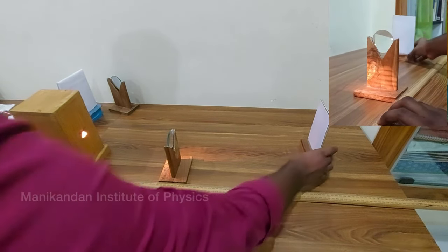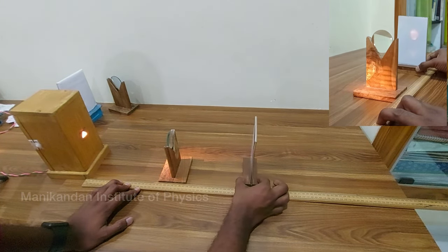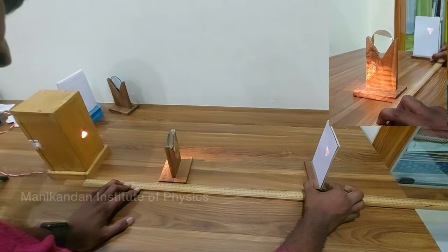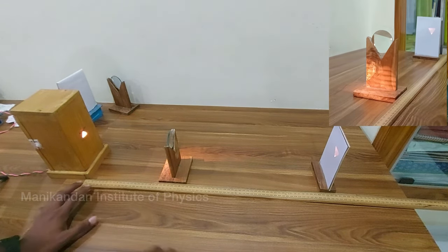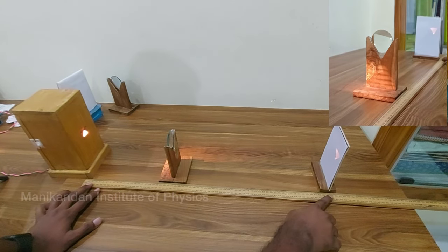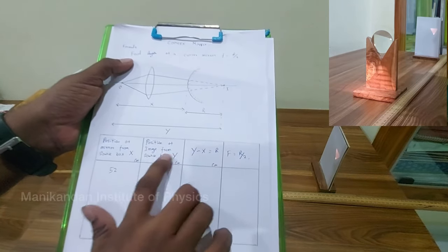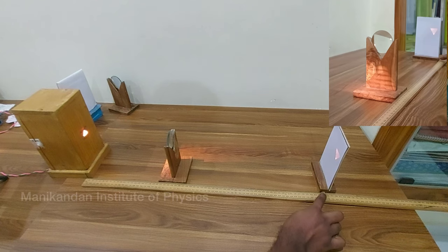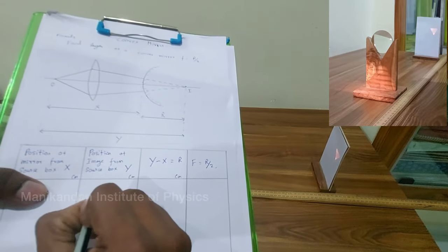Now I am going to move my screen until I get a clear image. At this point I am getting a clear image. The distance from this point to this point is my y. So the distance from the object to the image — that is, the position of the image from the source box — is y. This distance is 64 centimeters.